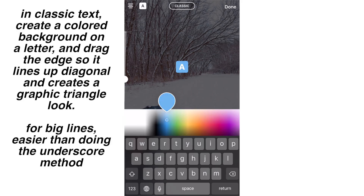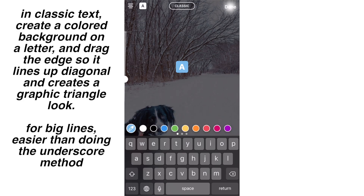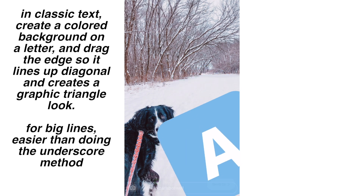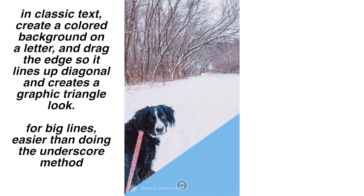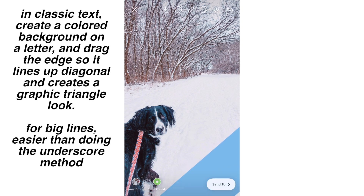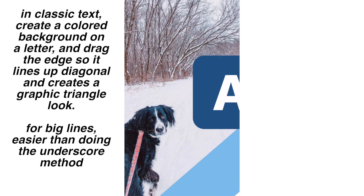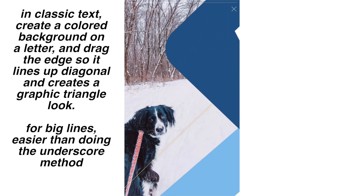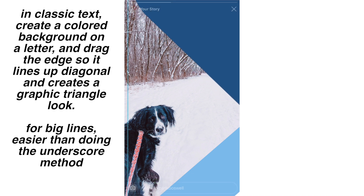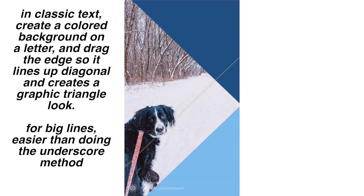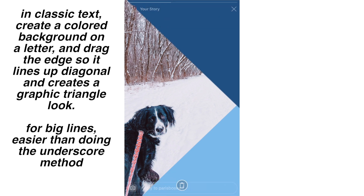Similar to the look of lines, another cool graphic accent thing I like to do on my stories is using the block letter ability of classic text and then dragging that really big to the edge. It gives another clean, sharp, blocked line look. I find this technique is easier than doing the underscore line type of thing. You make the letter have a block behind it and then just drag it to the edges and adjust — it gives a cool graphic line look.